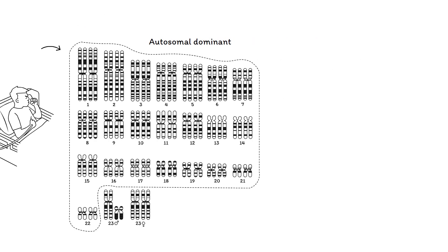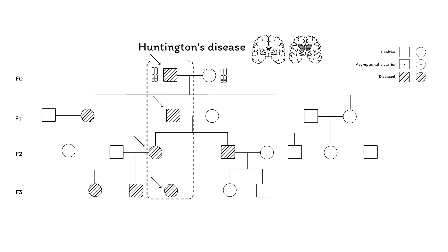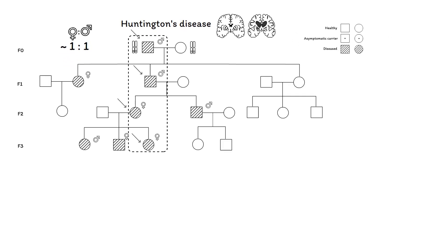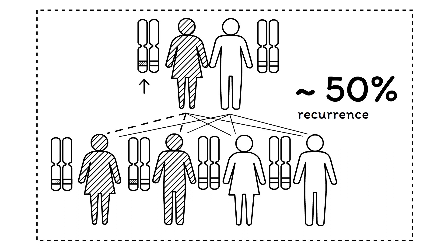Looking at a family tree of an autosomal dominant disorder — for example, Huntington's disease — we observe the following characteristics. The disorder is present in all generations, as an affected individual has at least one affected parent. There is thus a vertical pattern visible. Furthermore, males and females are equally affected, and since one allele causes disease, the chance is about 50% that the disorder is passed on from the affected parent.